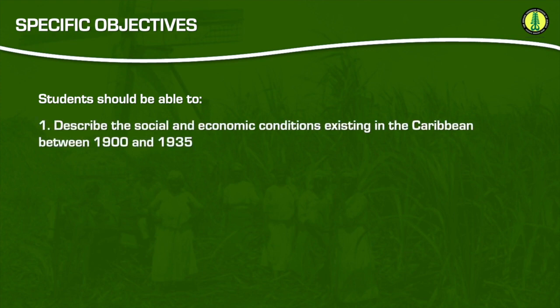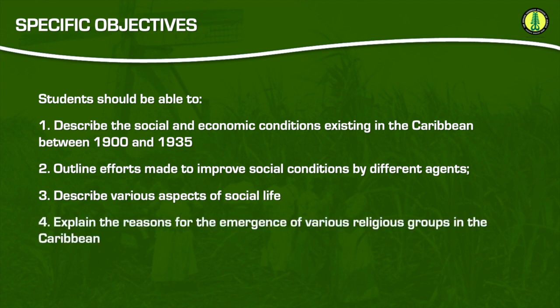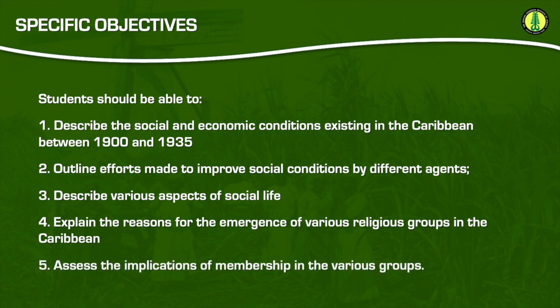If we look at our CSEC syllabus, we'll see that there are specific objectives for this theme. Students should be able to describe the social and economic conditions existing in the Caribbean between 1900 and 1935, outline efforts made to improve social conditions by different agents, describe various aspects of social life, explain the reasons for the emergence of various religious groups in the Caribbean, and assess the implications of membership in the various groups.